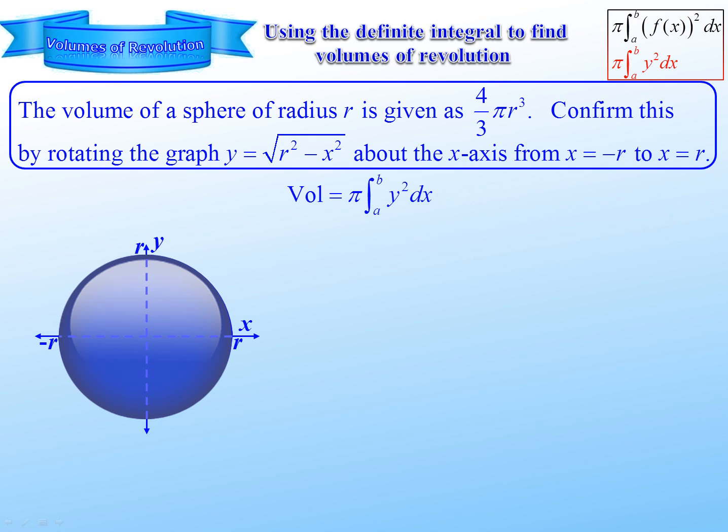So we use the formula, pi integral a to b, y squared dx. So we are going to square that square root, which means the square root drops away. And this is the standard integral now.